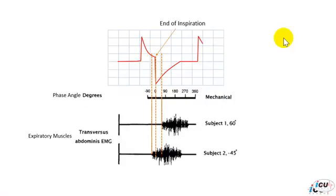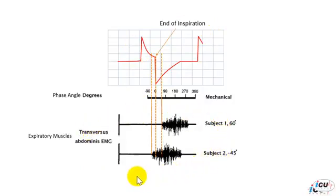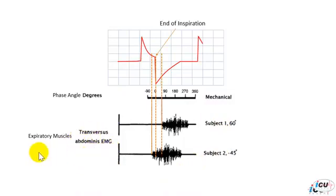In order to understand this phenomenon, it is critical that you observe what's happening on the ventilator with what's happening with the patient's expiratory. So here we are recording the EMG on the transversus abdominis muscle, which is an expiratory muscle, and we have two subjects.